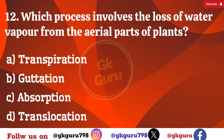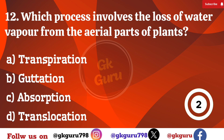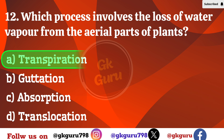12th question: Which process involves the loss of water vapor from the aerial parts of the plant? Option A: transpiration. Option B: guttation. Option C: absorption. Option D: translocation. Correct answer: Option A, transpiration.